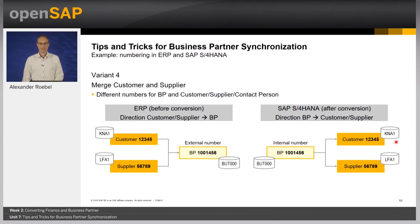Finally, we have the case where we merge and do not care for the same numbers of any of the affected master data objects. Each object is assigned to an internal number range.